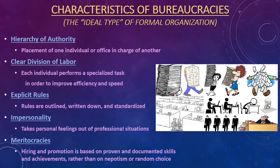Let's go over the basic characteristics of bureaucracies. First, there is a hierarchy of authority — a placement of one individual or impersonal office in charge of another, so there's a line of hierarchy and everyone has very set responsibilities. The second characteristic is a clear division of labor: each individual performs a specialized task, and this specialization improves efficiency and speed. If each person is really great at doing one thing and everyone is doing their one thing at the same time, that speeds up the entire process.